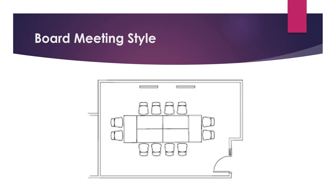Then we have the board meeting style setup, used for conference rooms. You can find a round, oval, or rectangular table — or rectangular tables joined together — forming one long table where people sit facing each other and discuss a specific agenda in a meeting style.